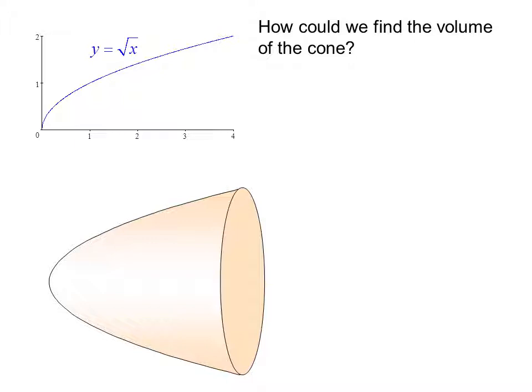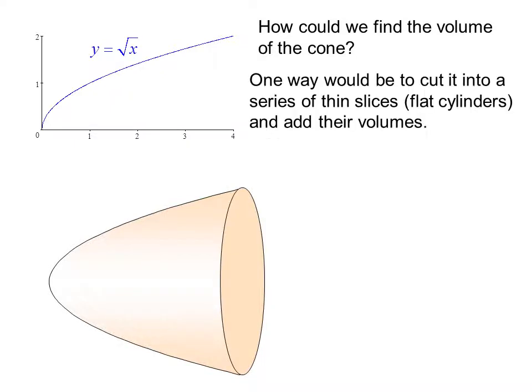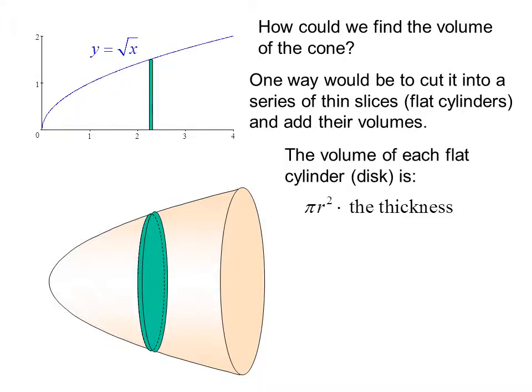How can we find the volume of the cone? One way would be to cut it into a series of thin slices or flat cylinders and add their volumes. The volume of each flat cylinder or disk is pi r squared times the thickness.